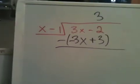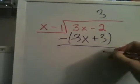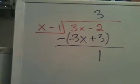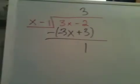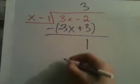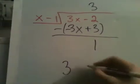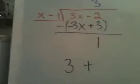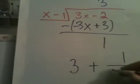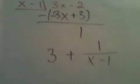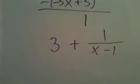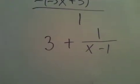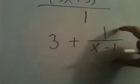So the first part cancels out, 3x - 3x, -2 + 3 gives me 1, which means my remainder is 1. So the form of this that's actually going to be more helpful to me is if I write it as 3 + 1/(x - 1), because now I have a function right here that looks like the reciprocal function.